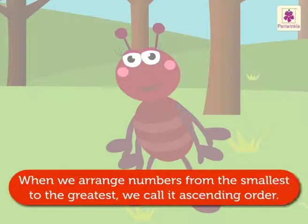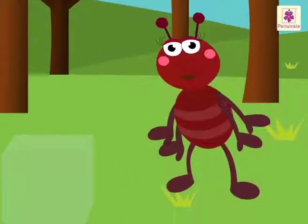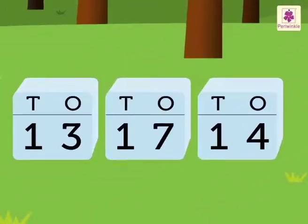When we arrange numbers from the smallest to the greatest, we call it ascending order. Look at the sugar cubes. Each sugar cube has a number written on it in the form of tens and ones.